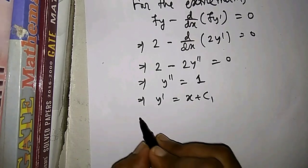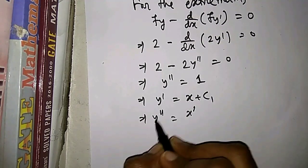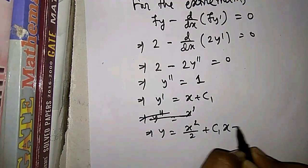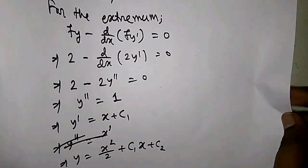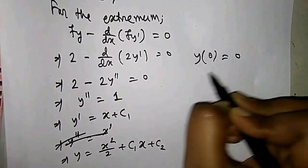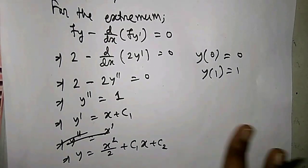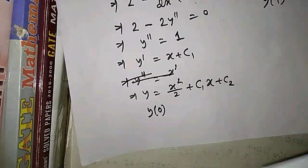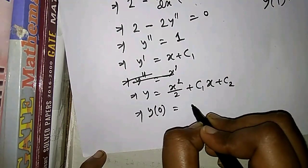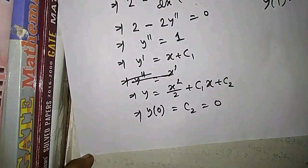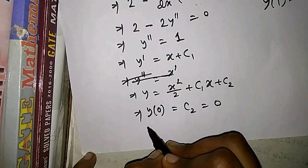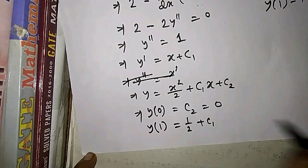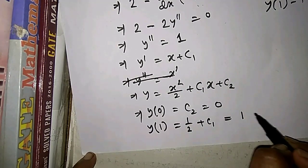From y'' = 1, integrating gives y' = x + c1, and integrating again gives y = x²/2 + c1·x + c2. Now applying the boundary conditions y(0) = 0 and y(1) = 1: putting x = 0 gives c2 = 0.